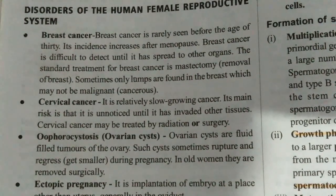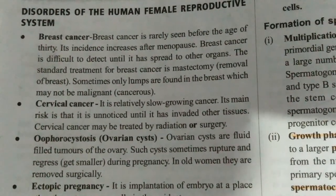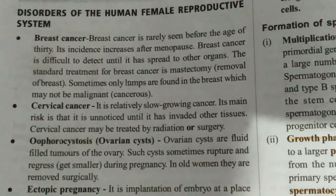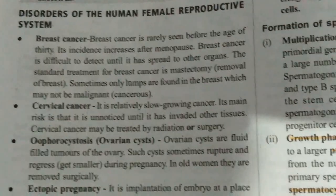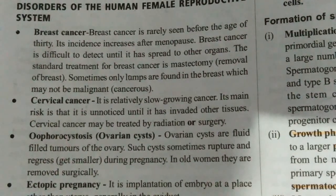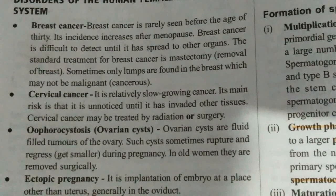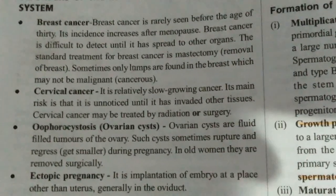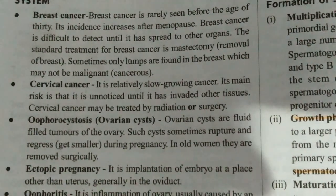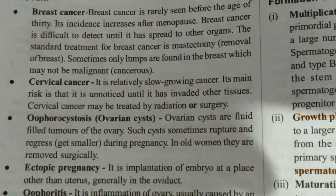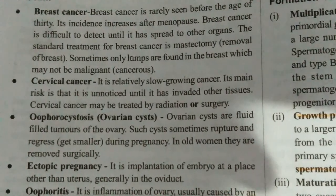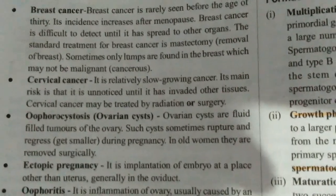Welcome guys, today we shall discuss the disorders of the human female reproductive system. The main disorders include breast cancer. Breast cancer is rarely seen before the age of 30.